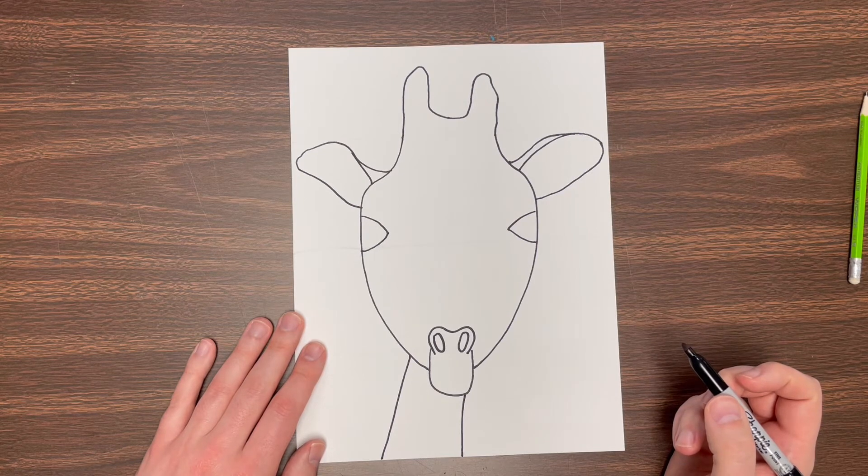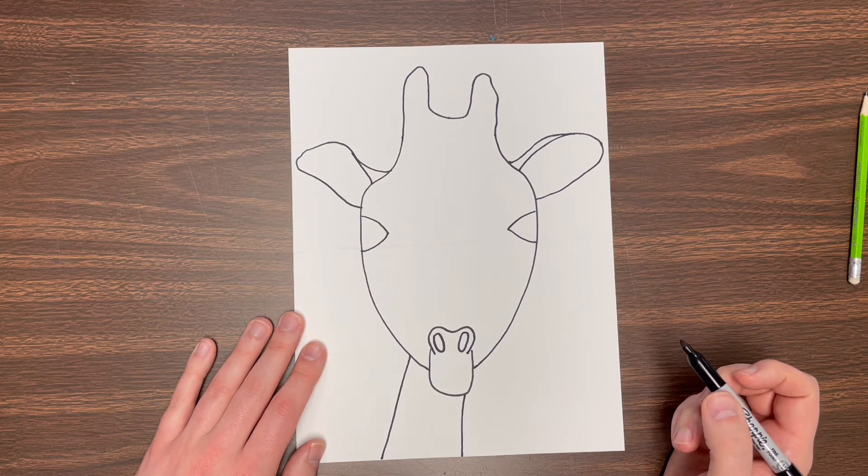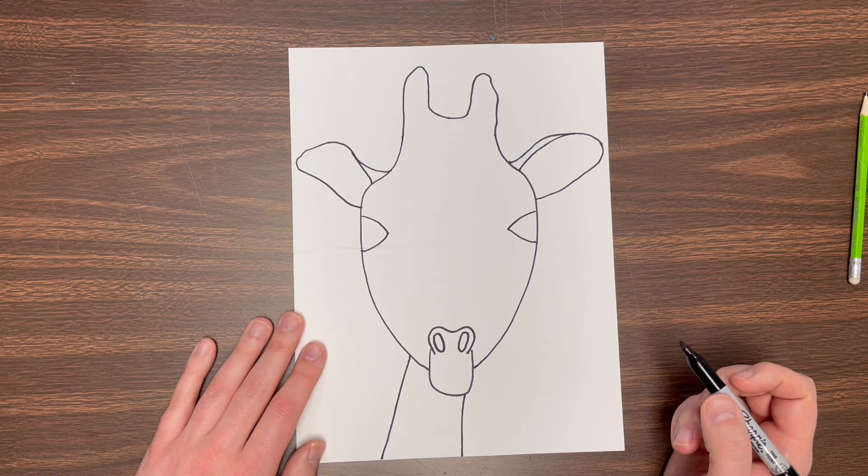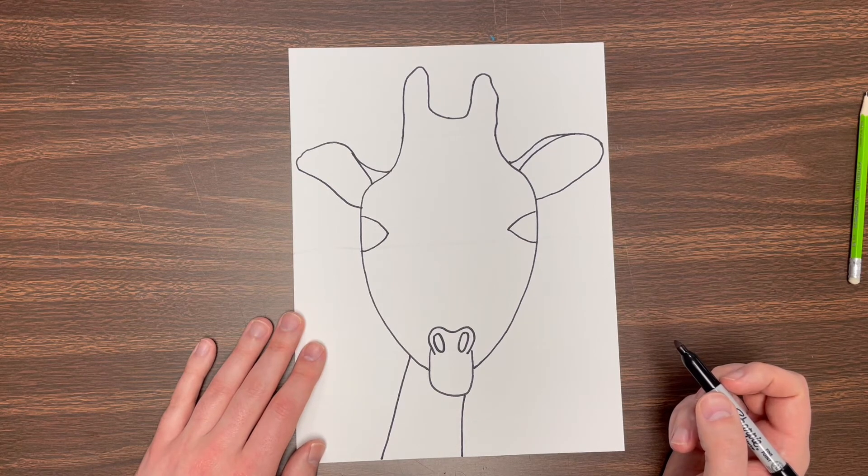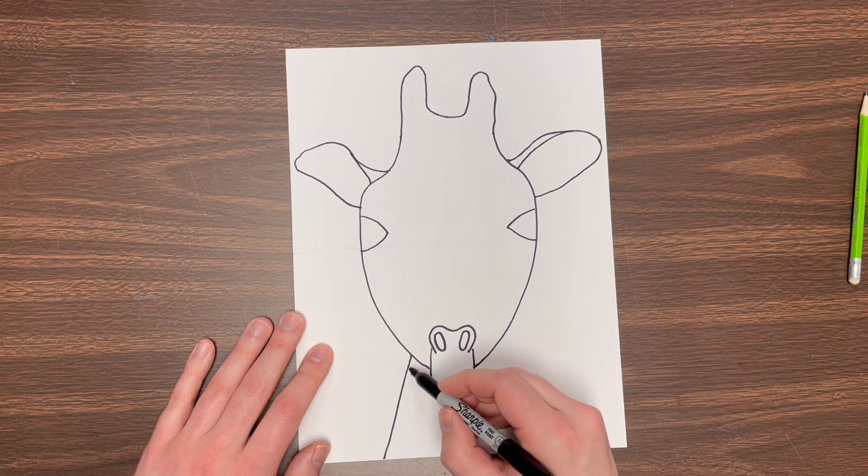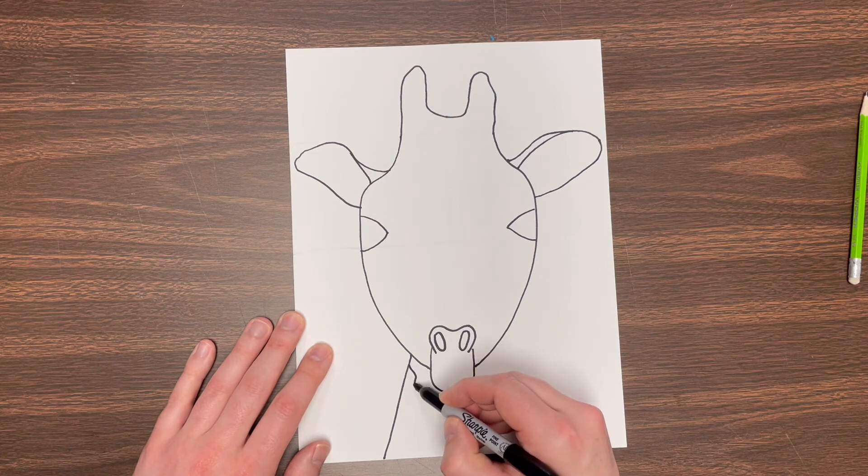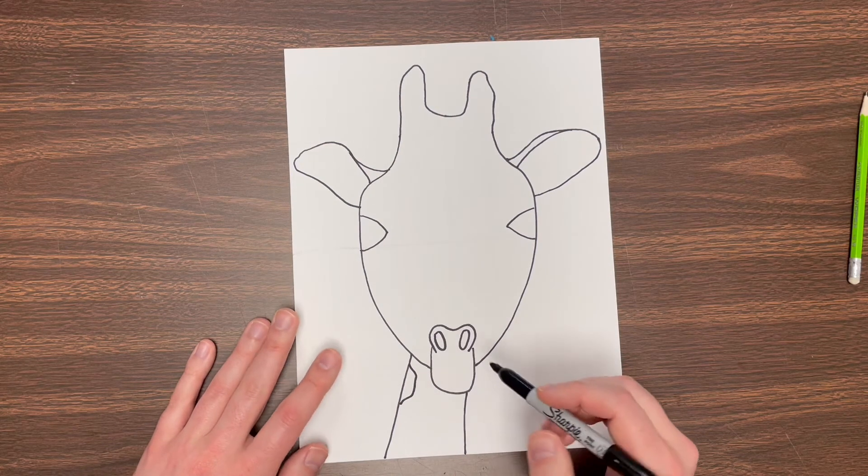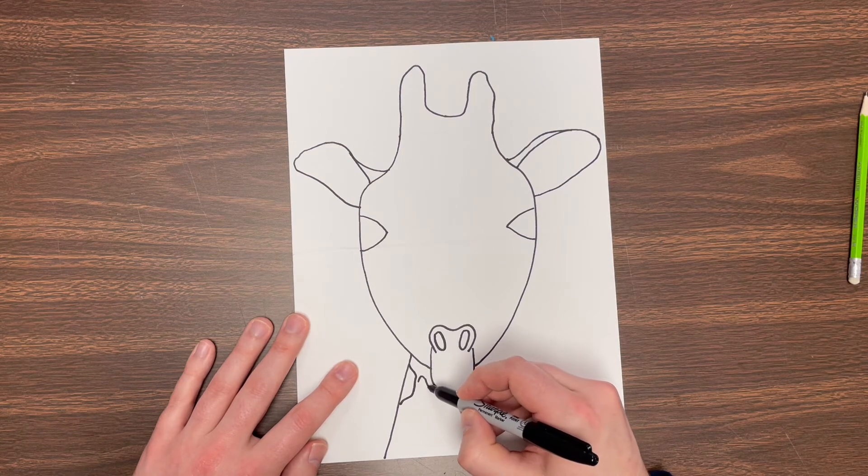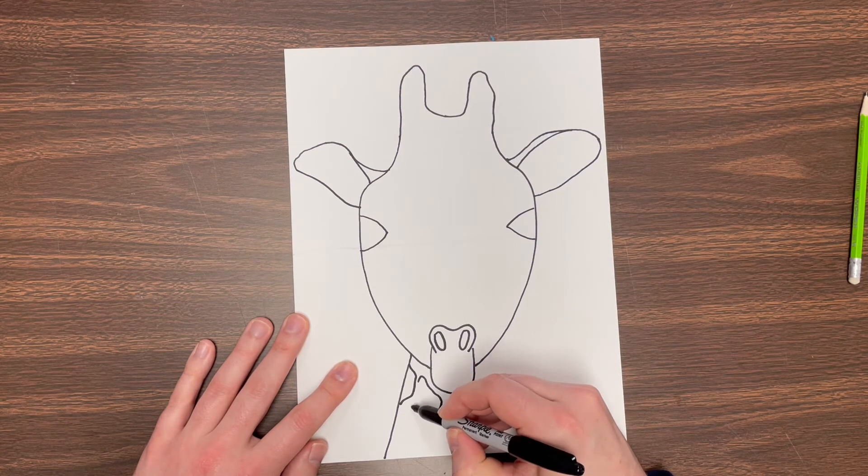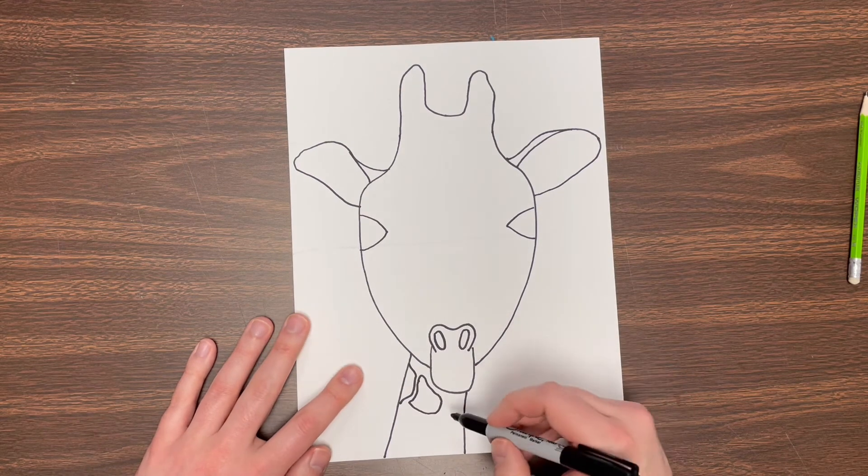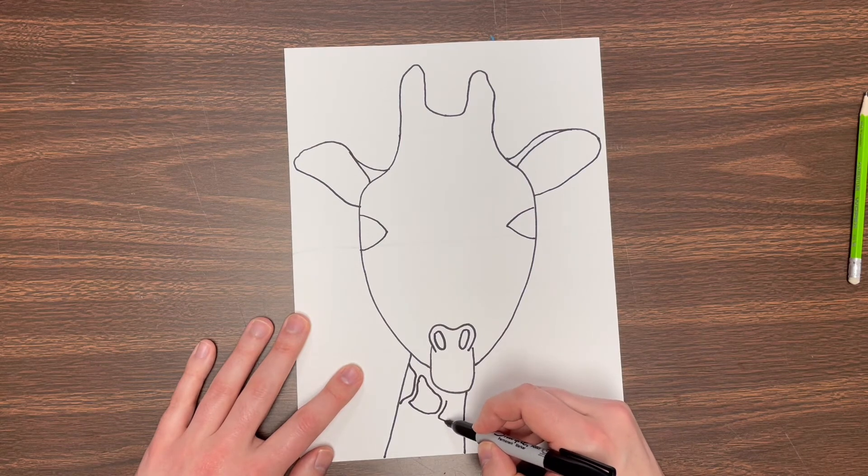The next thing I'm going to do is add some spots. I'm gonna add this kind of pattern. Now this may be a little bit of trivia you might not know: some giraffes have different types of spotting and that's how you can tell what areas they're from.